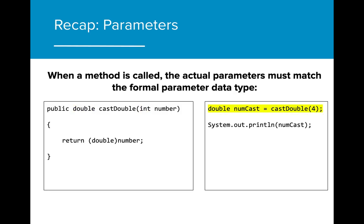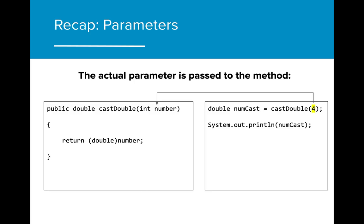When a method is called, the actual parameter must match the formal parameter type. In this case, the value 4 is an int, so this value can be passed to the castDouble method. The actual parameter is then passed to the method and used in the method accordingly.